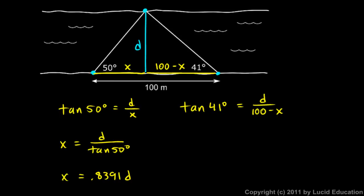Let's rearrange this algebraically, and we get 100 minus x is equal to D over the tangent of 41 degrees. And 1 over the tangent of 41 is 1.1504. So I can write 100 minus x equals 1.1504D.